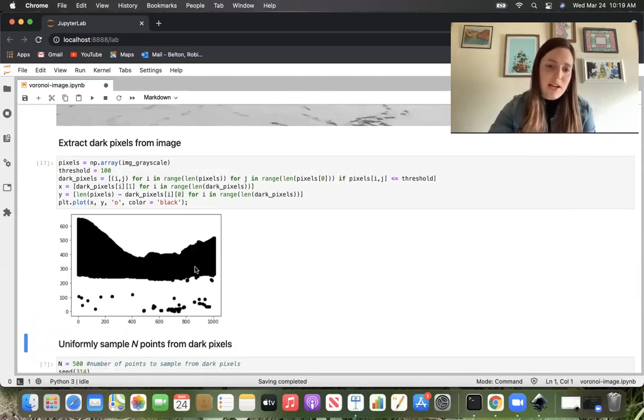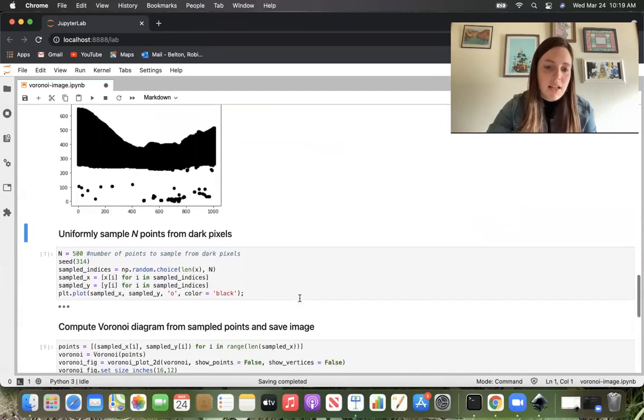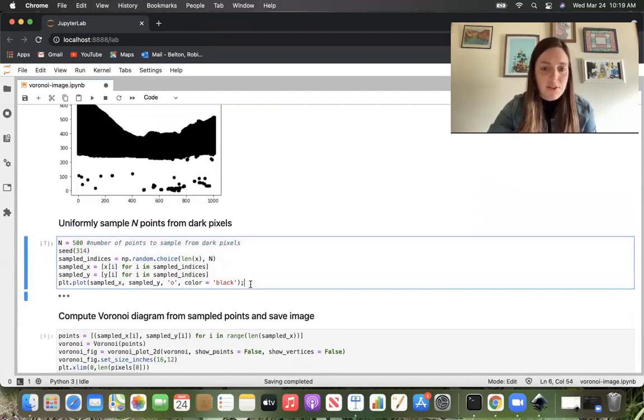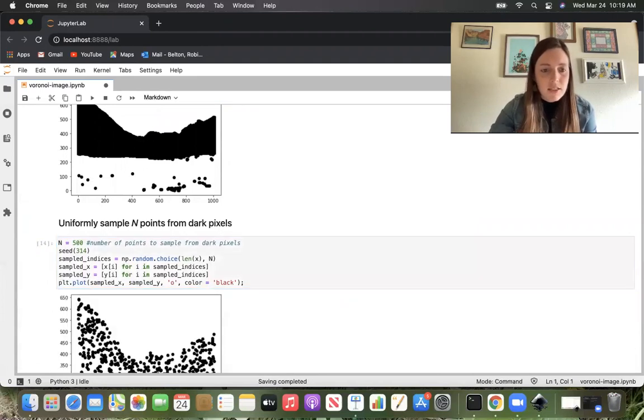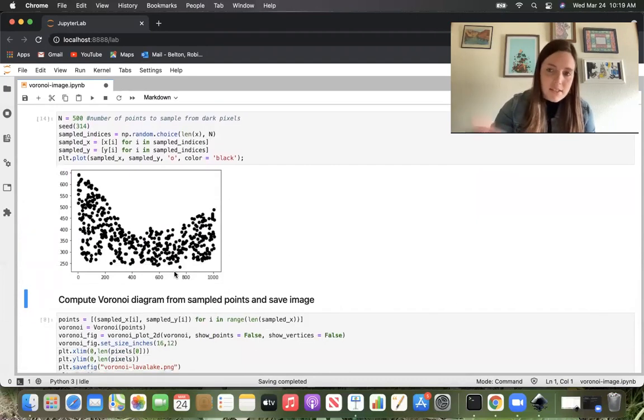If we try to compute a Voronoi diagram from this set of points, we're going to have a lot of very tightly packed cells because the points are all very clumped together. So in order to avoid that, I am going to just extract a sample of these points. That is what this chunk of code is going to do. I run it and now I have a nice set of points that I can compute a Voronoi diagram from.